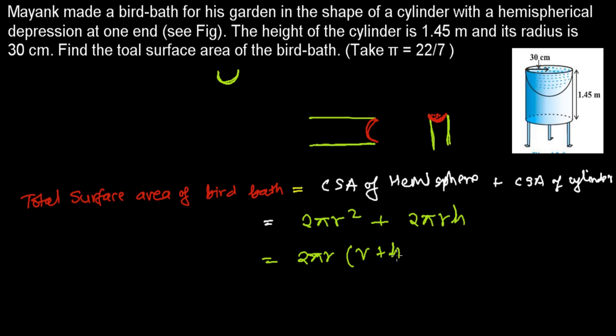That's going to be 2 times 22 over 7, and radius is 30 centimeter. Again it is 30 centimeter, and height is 1.45 meter.